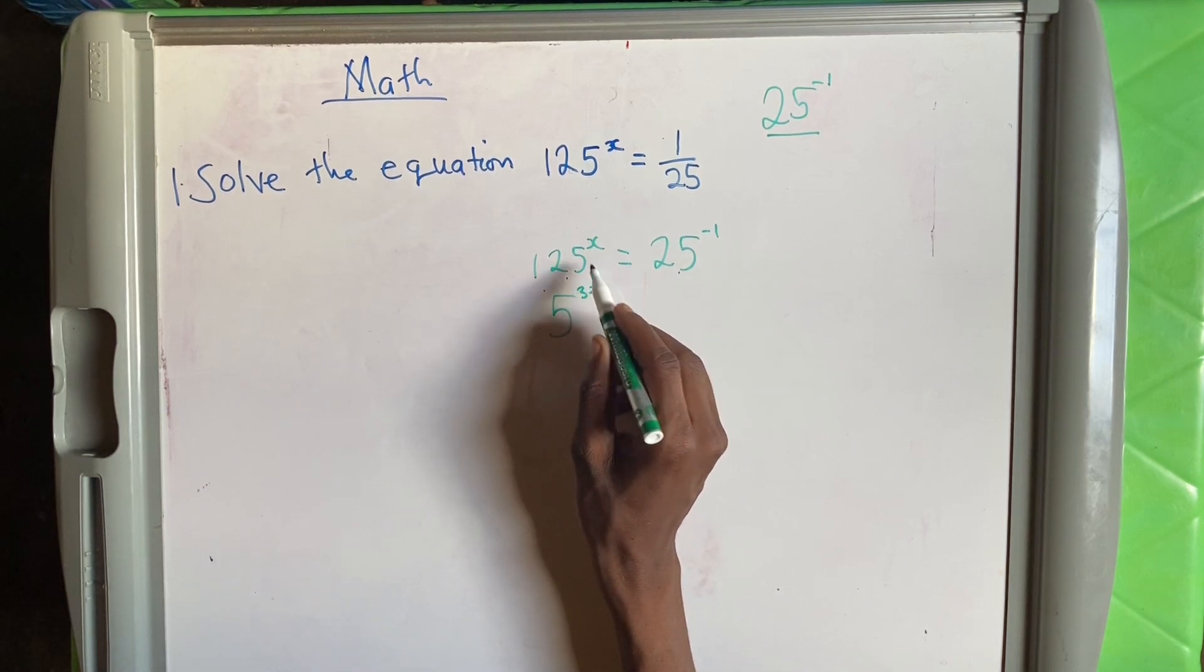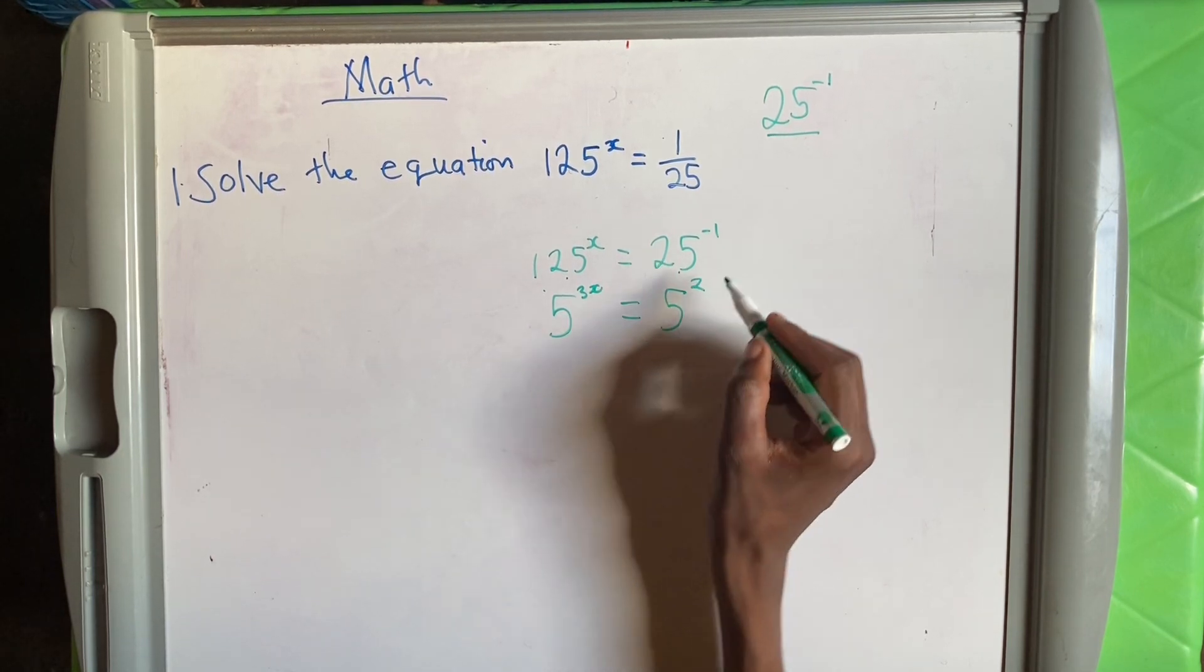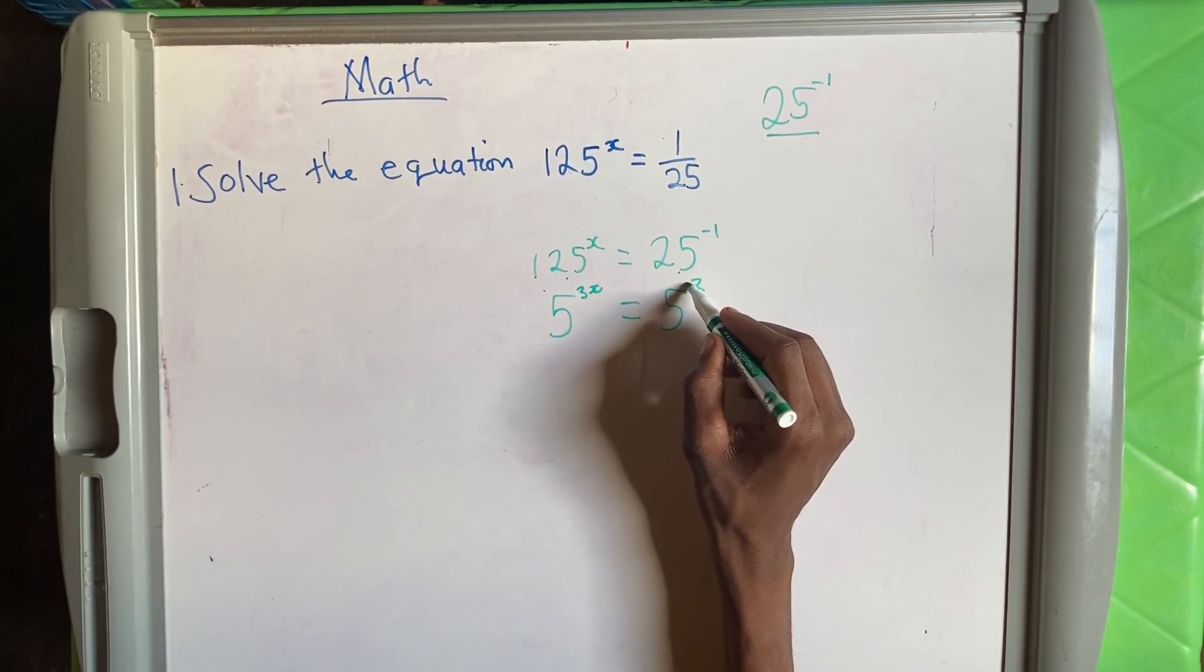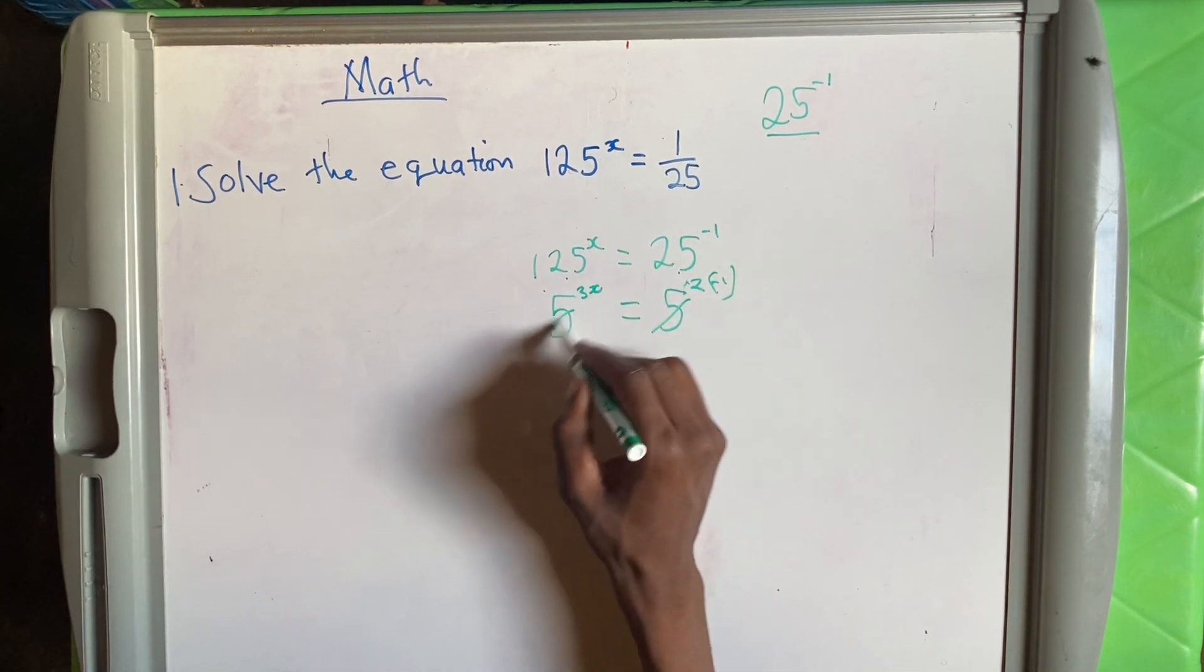There is an x on top, remember, which is equal to, again, 5 to the power 2. We're going to get 25. So we have a negative 1 there. So 5 goes, we have 3x equals negative 2.